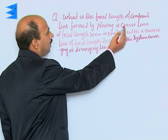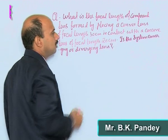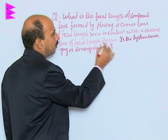What is the focal length of compound lens formed by placing a convex lens of focal length 30 centimeter in contact with the concave lens of focal length 20 centimeter?